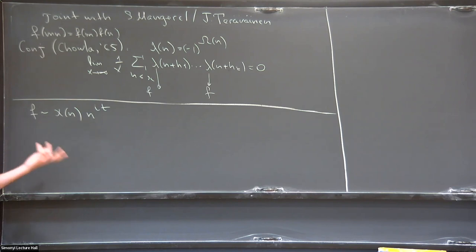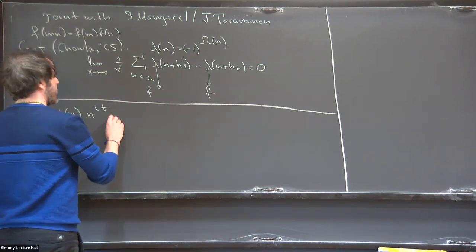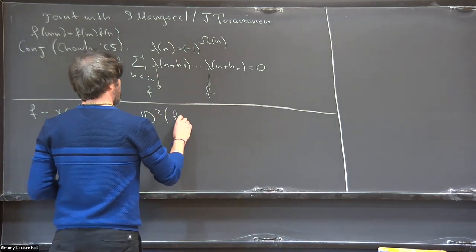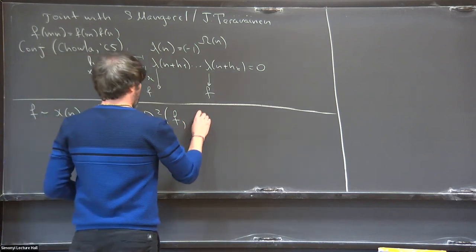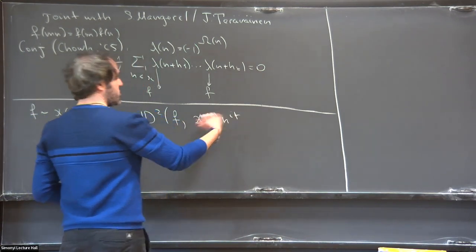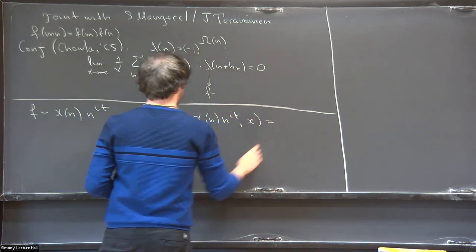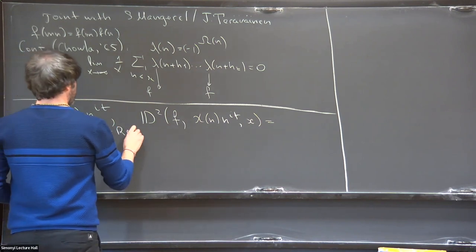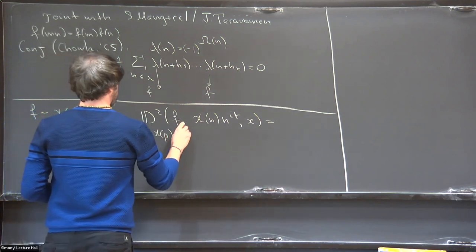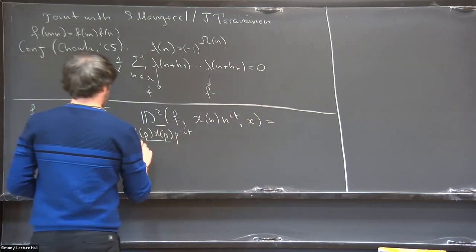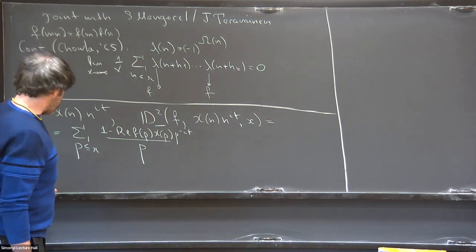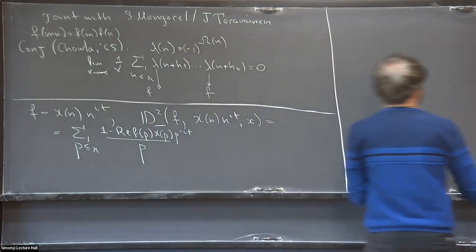If you change your function to chi times n to the i·t, nothing really changes. So if f is close to this modulated n to the i·t character, you also expect non-vanishing of correlations. What became clear in the past 20 years is what it means for a multiplicative function to be 'close.' The distance squared, which measures how close you are to a modulated character at point x, is a particular expression that happens to be the right way to measure distance between two multiplicative functions.